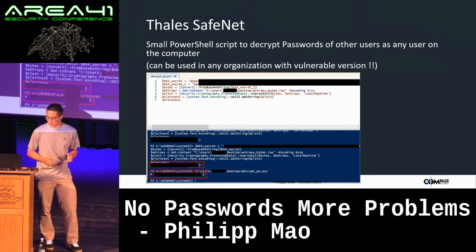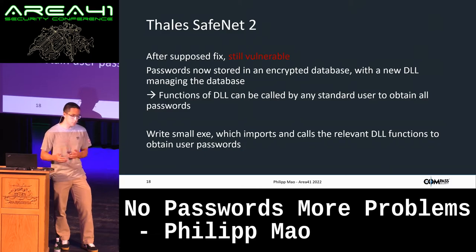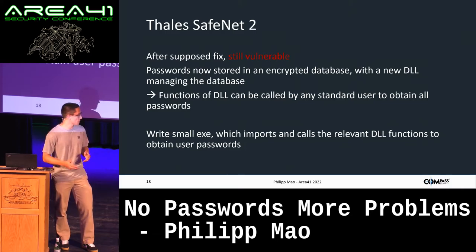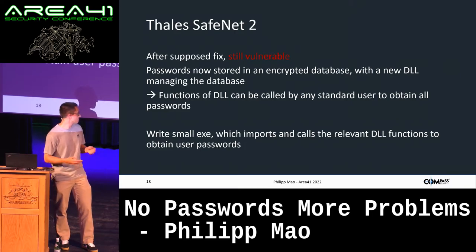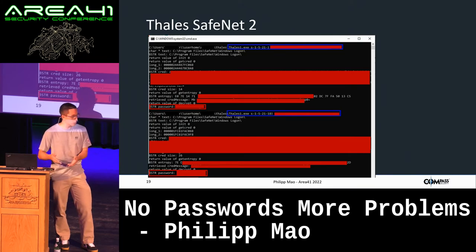This was disclosed to Thales, but their first fix failed. They added another layer of encryption but didn't fix the underlying local machine flag issue. They stored passwords in an encrypted database managed by a new DLL, but that DLL exports a function called getADcacheCreds. You can just write an executable that imports this DLL and calls that function with a user security identifier — if that user has used SafeNet to log into that computer, you get their password.